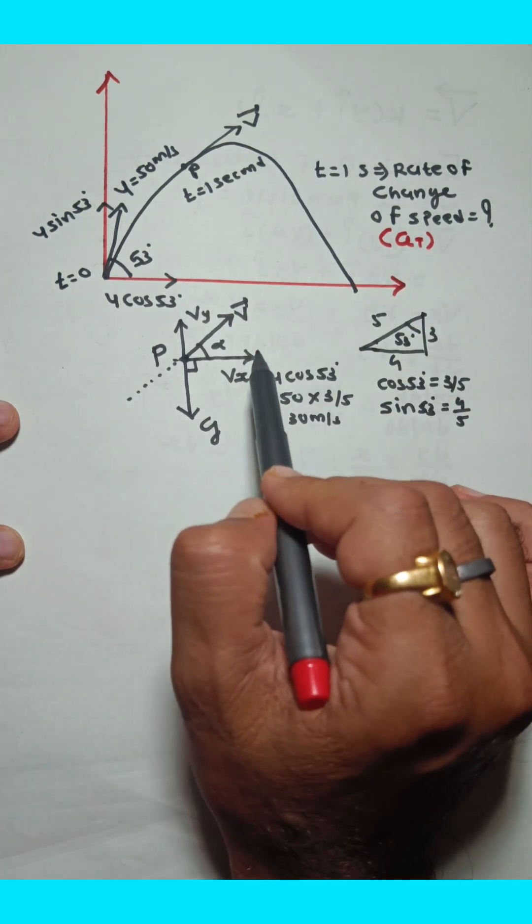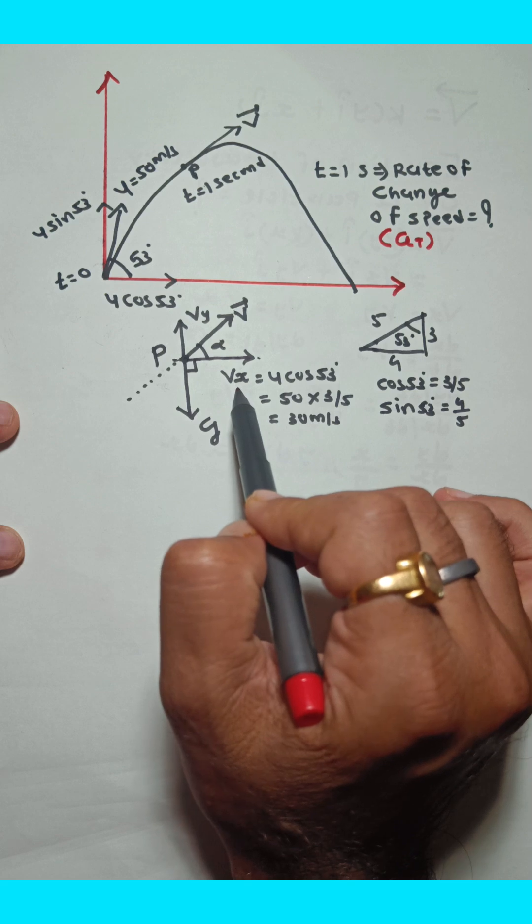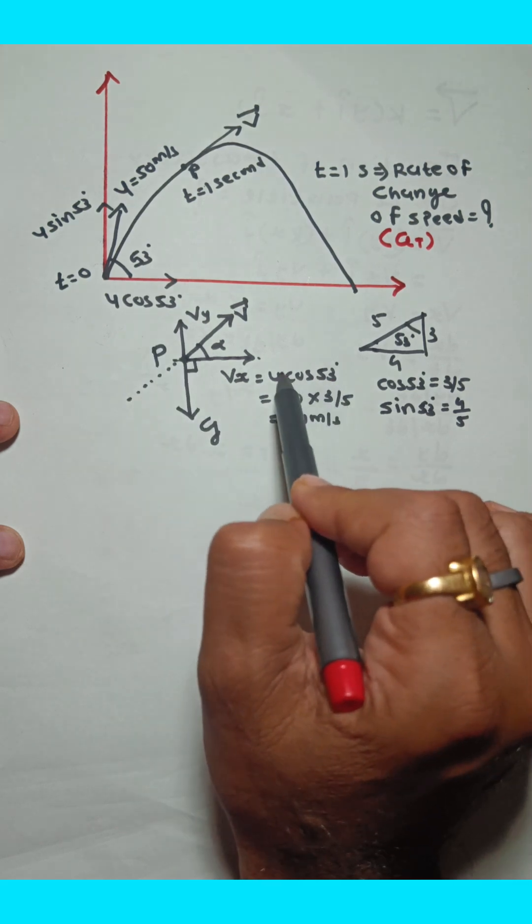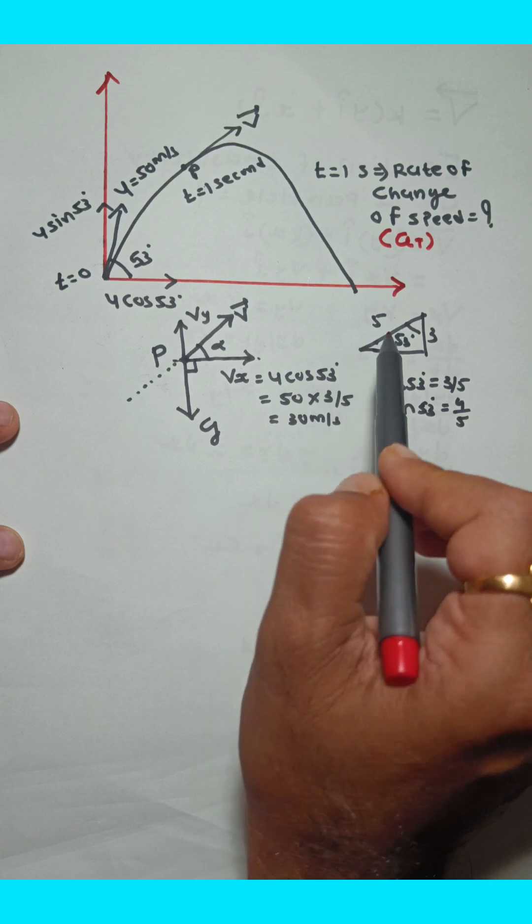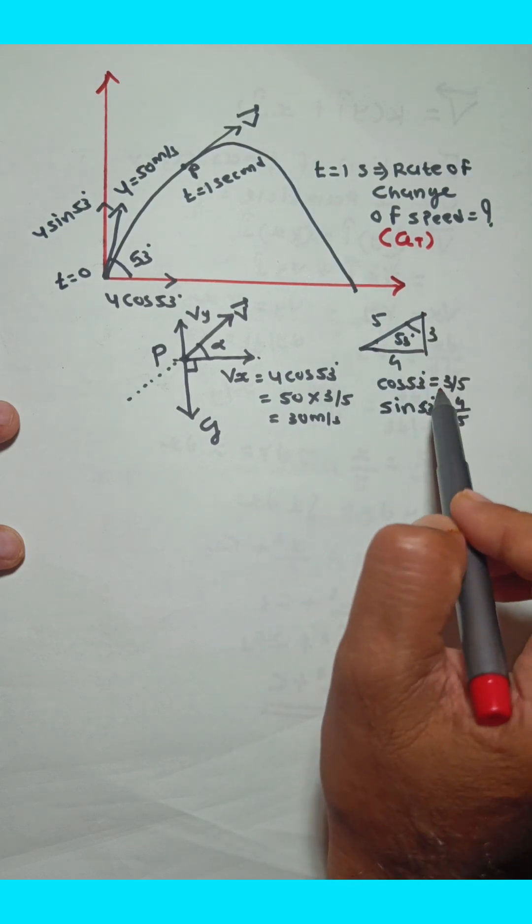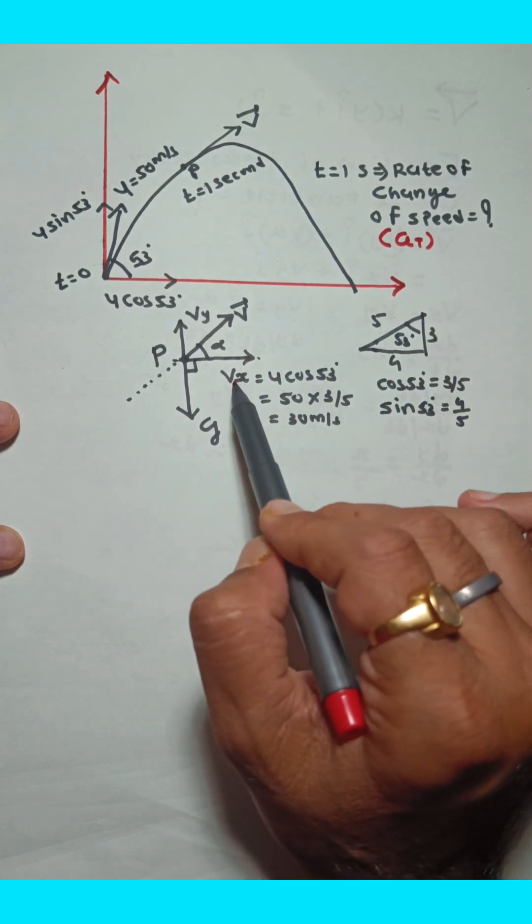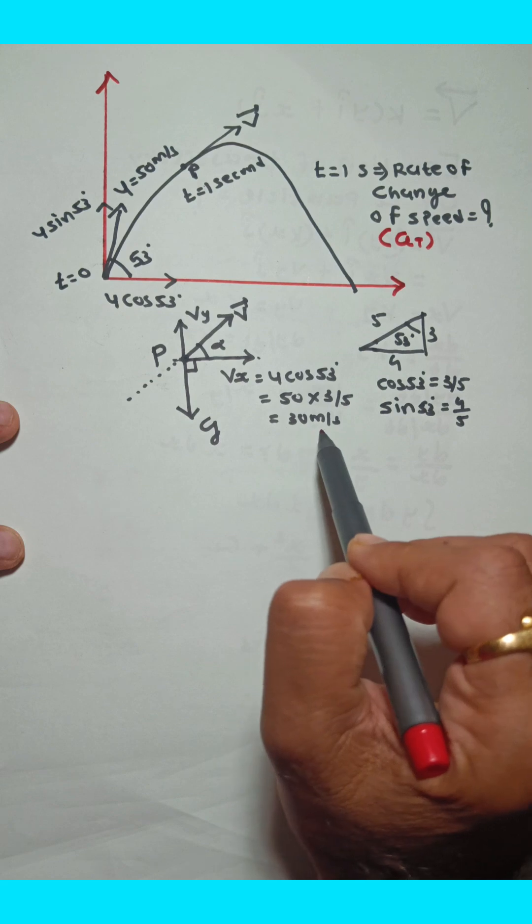Suppose v vector makes an angle alpha with the x-axis. The x component of velocity is constant and equals u cos 53. Since u is 50 and cos 53 equals 3/5 from the perpendicular triangle, the x component of velocity is 30 m per second.